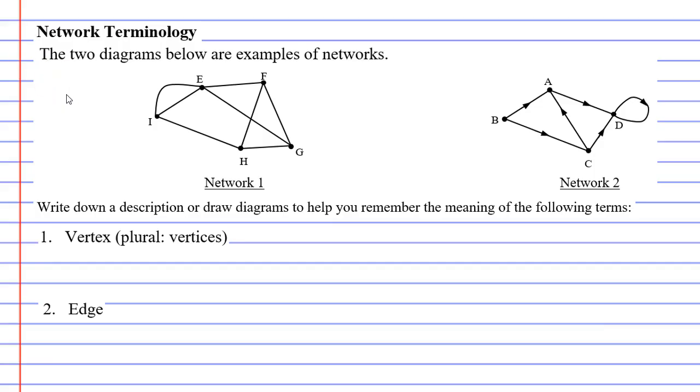The first word we're going to look at is vertex, the plural of which is vertices, and the vertices are basically the dots or points that we see in the network diagram. You can see that we've labeled them with capital letters. They don't have to be capital letters, sometimes they can actually have names like names of cities for example. Another word we use for vertices is the word nodes as well.